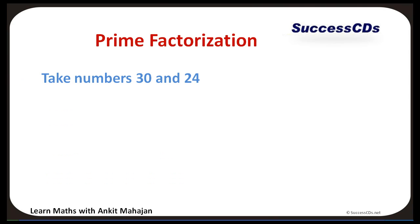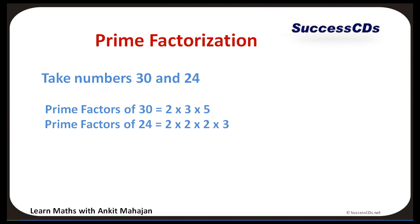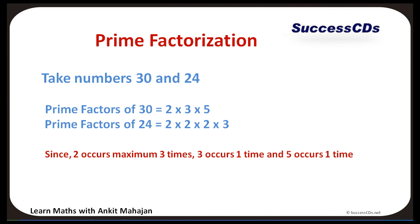Take numbers 30 and 24 as another example. Prime factors of 30 are 2, 3, and 5. Prime factors of 24 are 2, 2, 2, and 3. Here, 2 occurs maximum 3 times, 3 occurs maximum 1 time, and 5 also occurs maximum 1 time. Therefore LCM is 2 x 2 x 2 x 3 x 5, which equals 120.